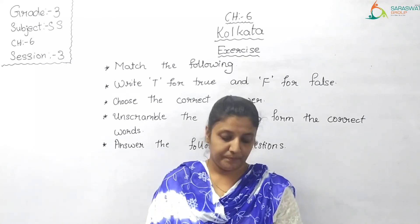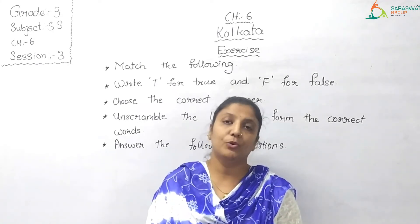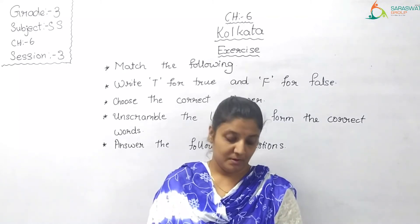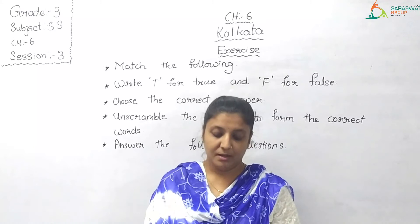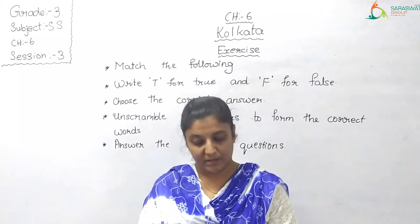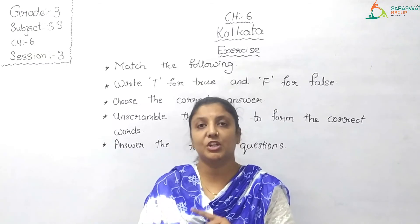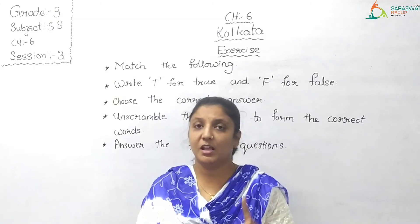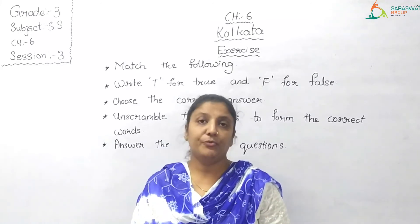B: Dash was the old name of Kolkata. Options: 1. Kalikata, 2. Sutanuti, 3. Calcutta, 4. Gobindapur. The answer is number 3, Calcutta. The other three names are the villages that were joined to form Calcutta, but the old name was Calcutta.